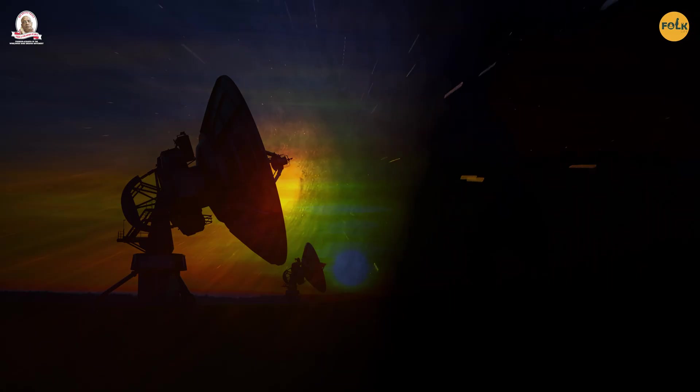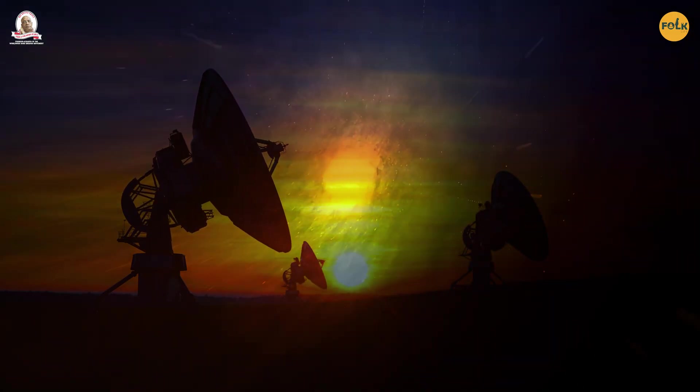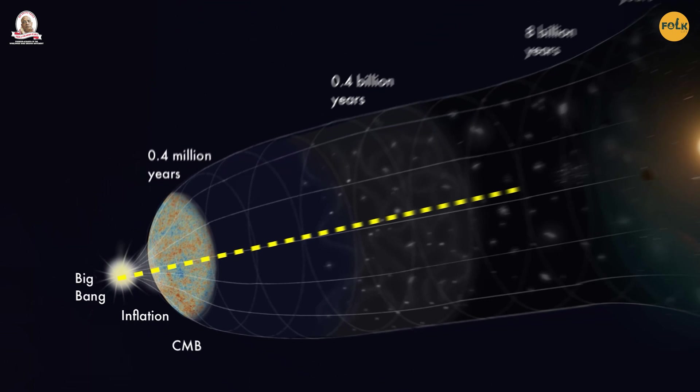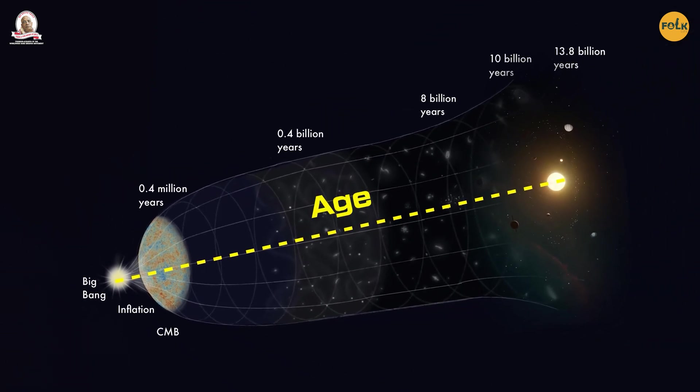When this radiation glow is captured and measured using highly sensitive antennas, a slight fluctuation is found in it at the level of 10 to the power of negative 5. This fluctuation is directly related to the age of the radiation.